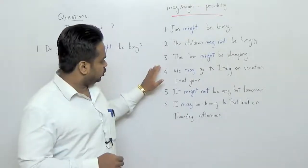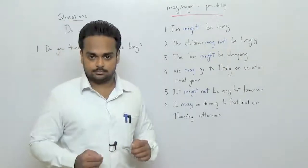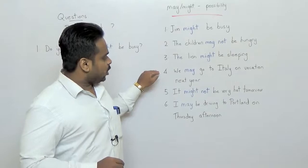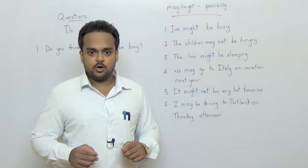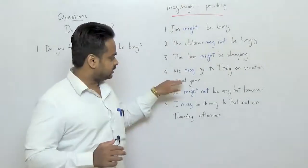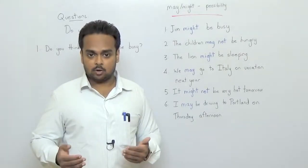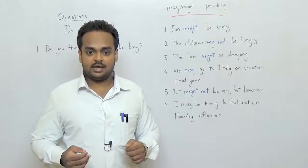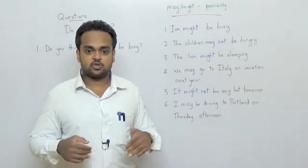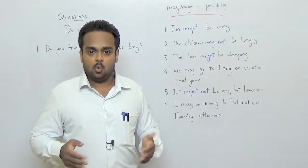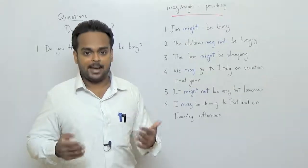Alright let's now look at the next three sentences and these all talk about the future. Sentence number four is we may go to Italy on vacation next year. Now you know it's talking about the future because you have next year there. However we're still guessing about next year. This sentence tells you that we have not planned the vacation. We may go to Italy on vacation. If it's already planned and arranged I would say we're going to Italy next year. But here I'm not sure so we may go.